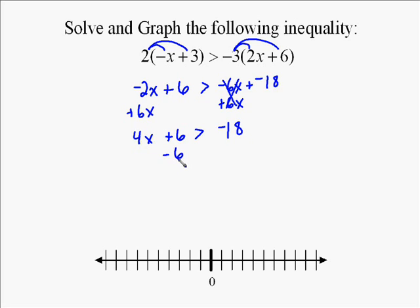Now we're going to add negative 6 to both sides. This gets the variable by itself with its coefficient. So 4x is left on the left side, and then on the right, negative 18 minus 6, so negative 24 is left.